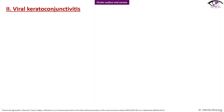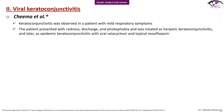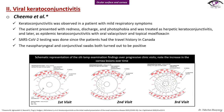A case of viral conjunctivitis was presented from Chema et al. Keratoconjunctivitis was observed in a patient with mild respiratory symptoms who presented with redness, discharge, and photophobia, and was initially treated as herpetic keratoconjunctivitis and later as epidemic keratoconjunctivitis. Since the patient had a travel history to Canada, COVID-19 testing was performed and both the nasopharyngeal and conjunctival swabs turned out to be positive. Here is the schematic representation of slit lamp examination findings showing the increase in corneal lesions over progressive clinic visits — first, second, and third visits.